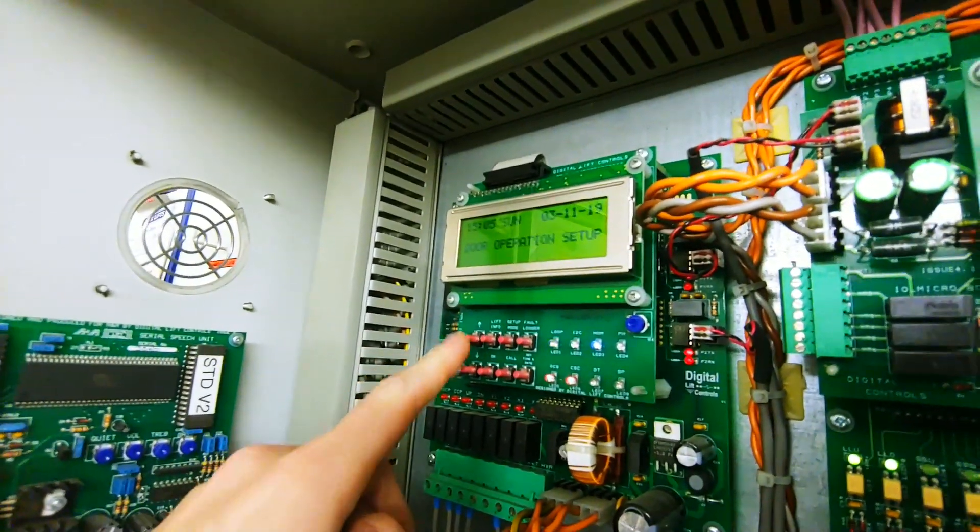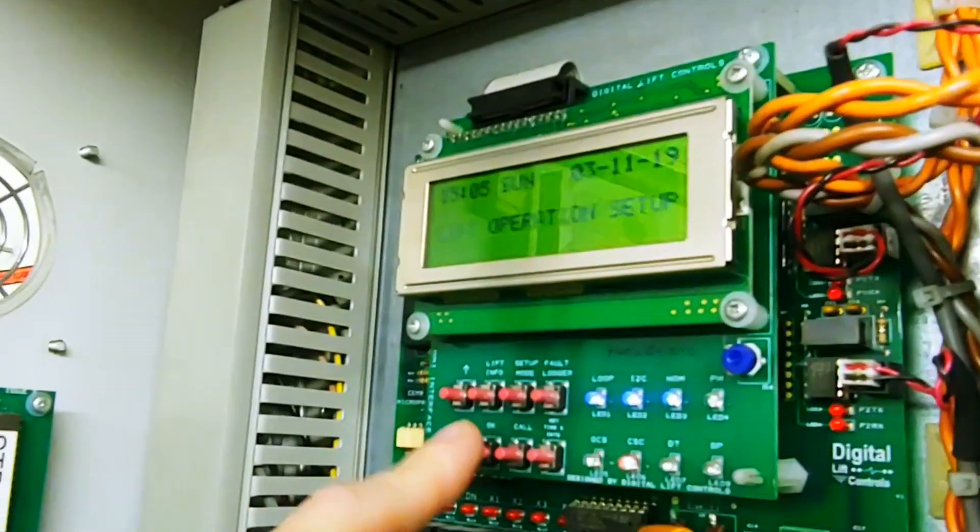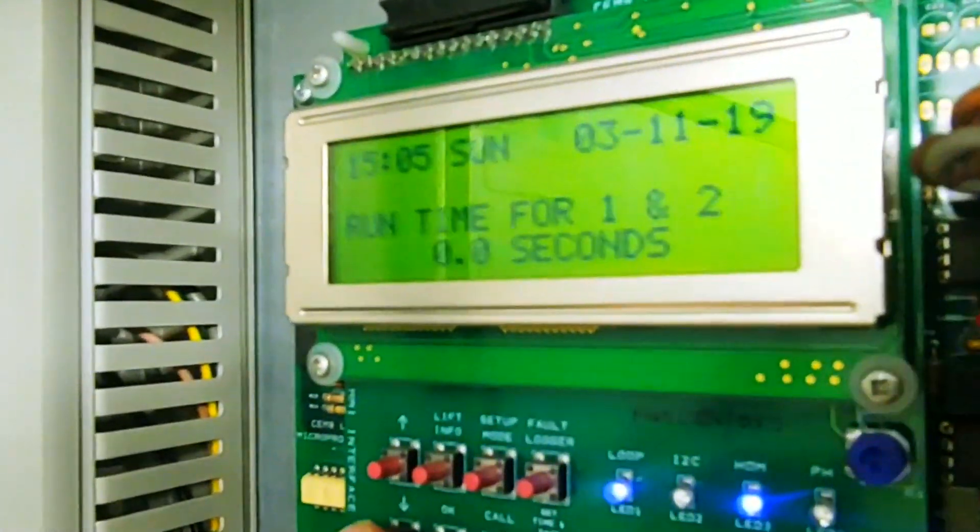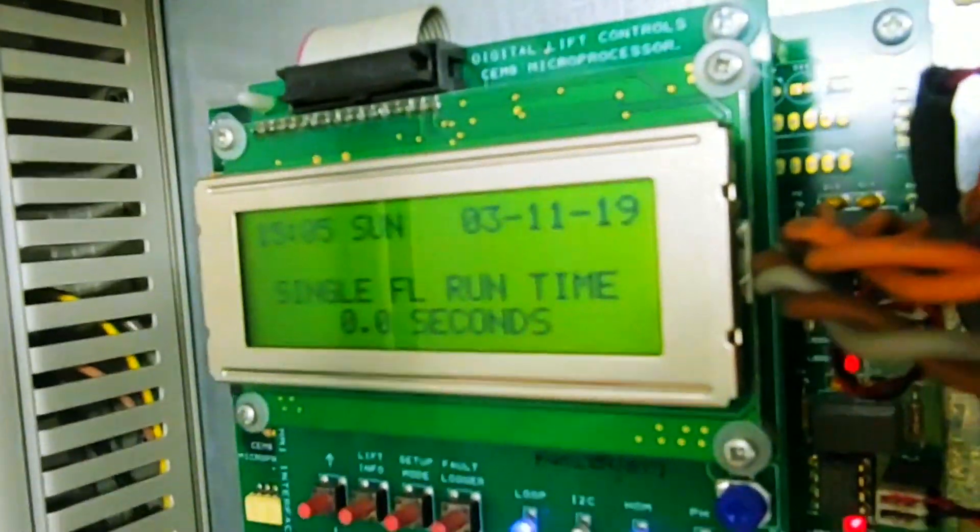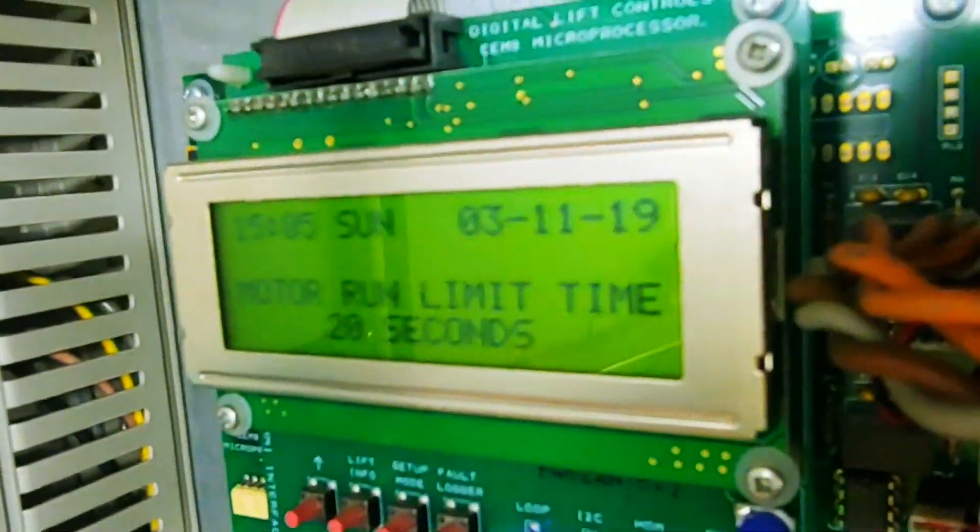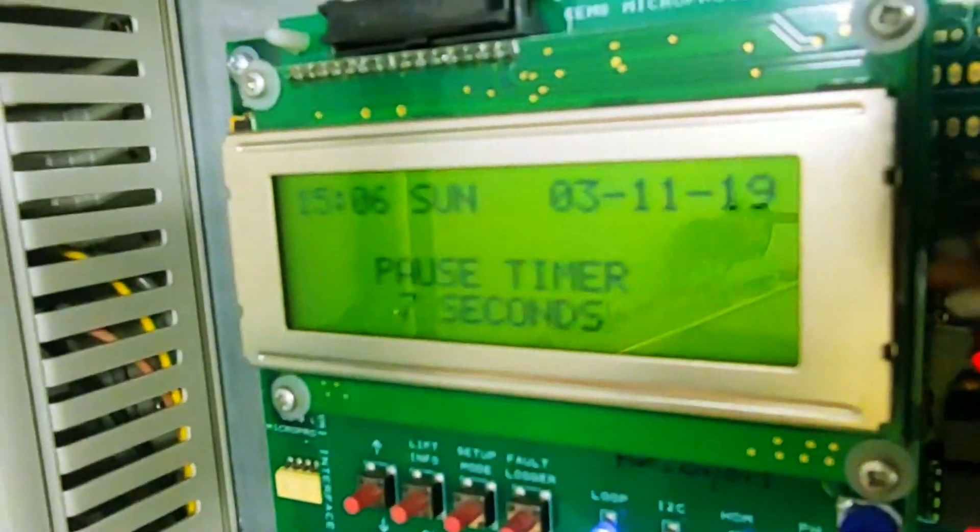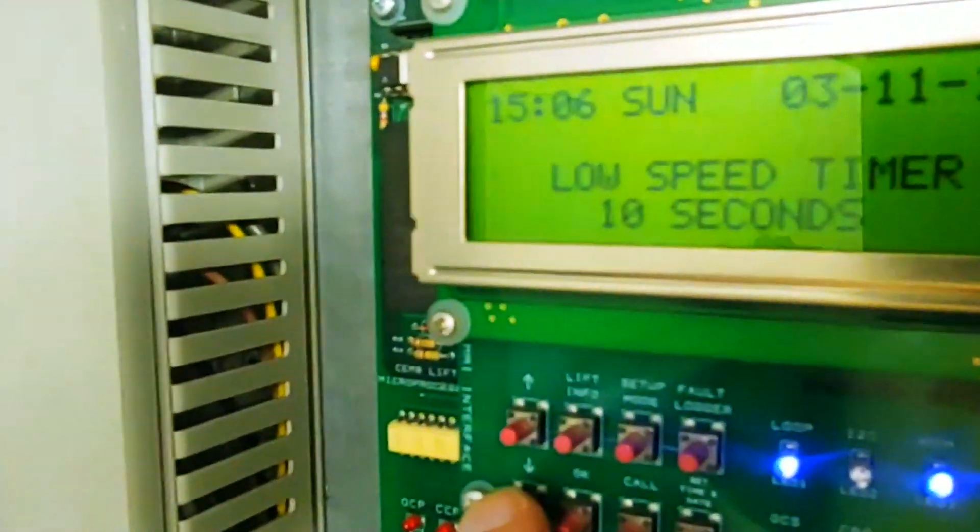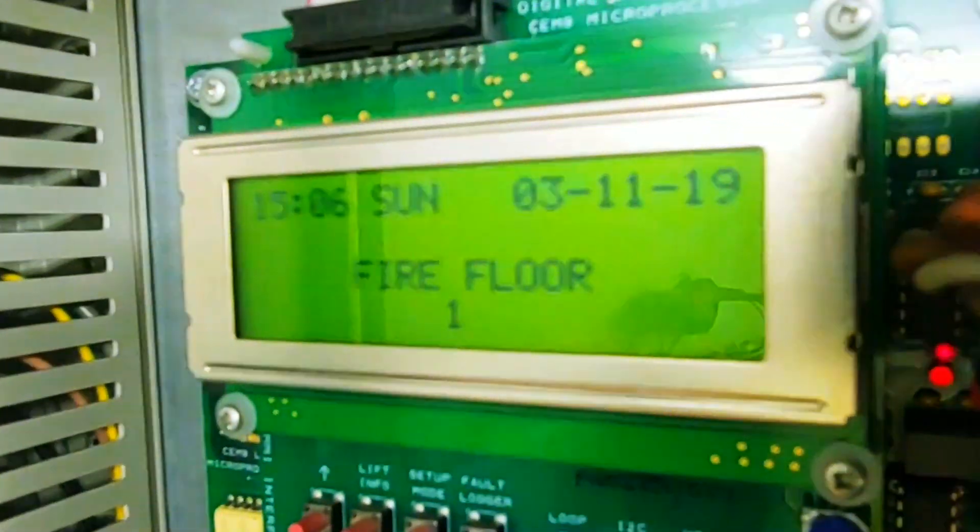The menus are slightly odd. If we do lift operation setup and go in there, it's literally got all the parameters. This is every parameter you need for a blind VF, it's quite simplistic. Run time, various timers, motor run time limit, car preference time, pause time. It's literally every single one of those little delays and things that you'd have on a very simplistic blind VF.